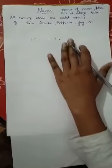Now let's move on to the kinds of nouns. There are five kinds of nouns: proper noun, common noun, collective noun, material noun, and abstract noun.